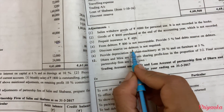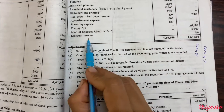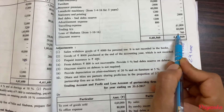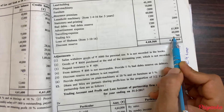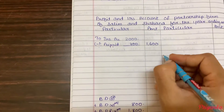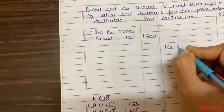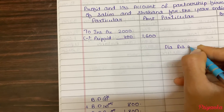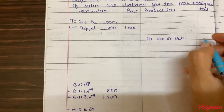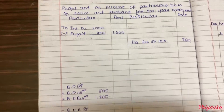Next, discount reserve on debtors is not required. As we can see, the discount reserve of 760 is given in your trial balance credit side. Just take it — no more calculation is going to be done. Write down discount reserve on debtor; no more entry is required, so only one single entry and here we finish.